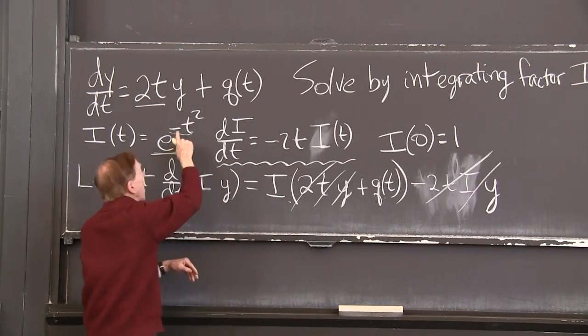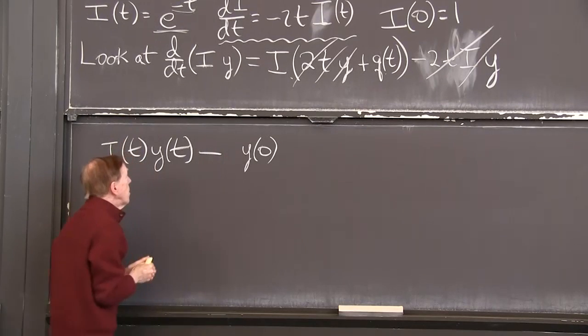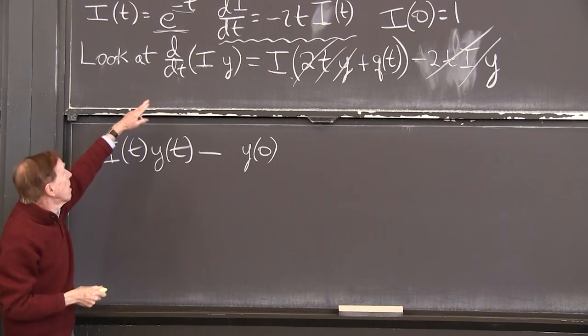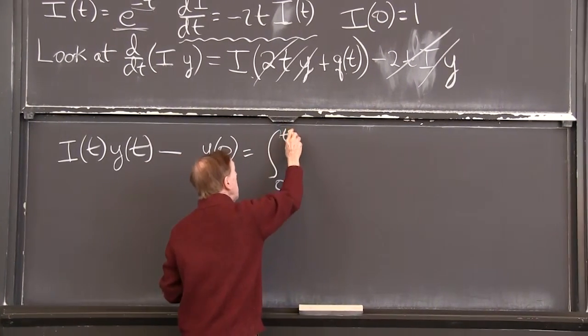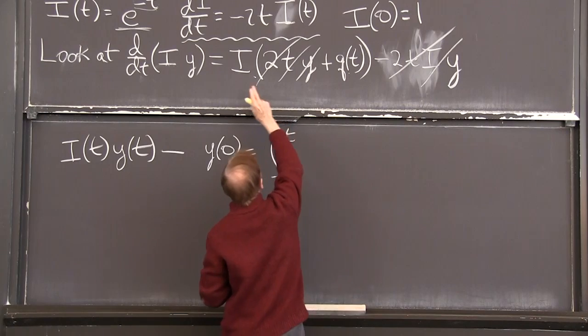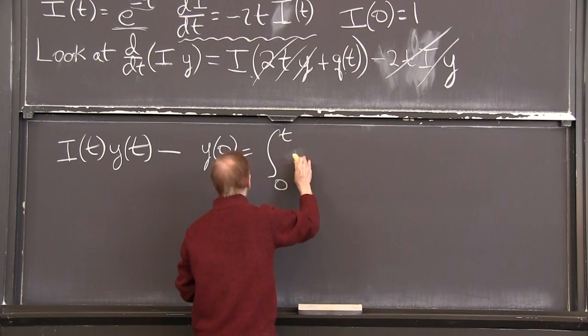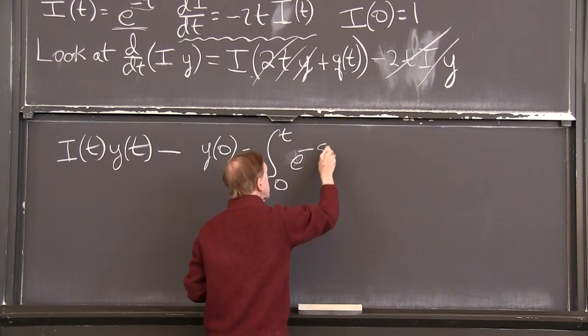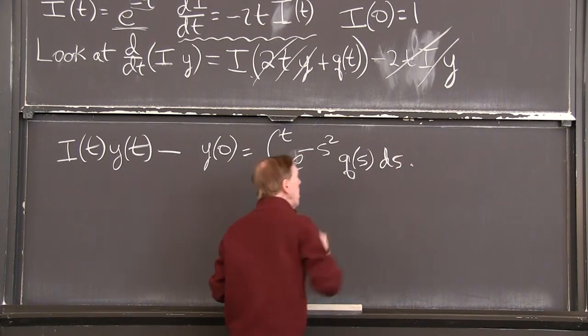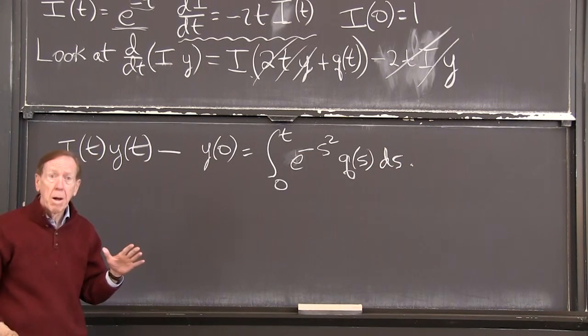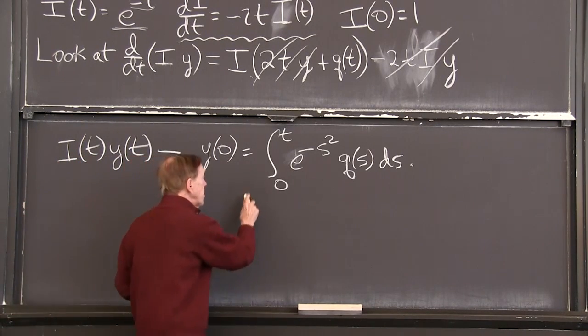When t is 0, I have e to the 0 power, which is 1. So that i of 0 is 1. So that's the integral of the derivative. And on the right hand side, I have the integral from 0 to t of i times q. So I'll put in i, e to the minus s squared q of s ds.